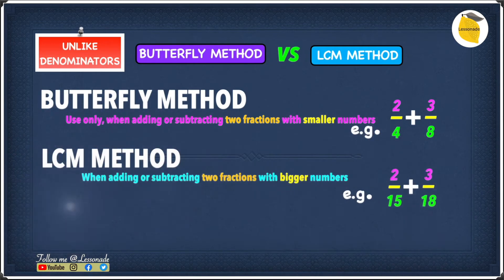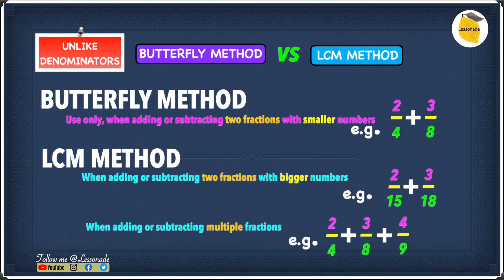However, with the LCM method you use it when adding or subtracting two fractions with bigger numbers. For example, 2 over 15 plus 3 over 18 has much bigger numbers, and with these bigger numbers you can use LCM method and it's much easier. You can also use LCM method when adding or subtracting multiple fractions, so for example we have 2 over 4 plus 3 over 8 plus 4 over 9. But with the butterfly method you can't add more than two fractions.